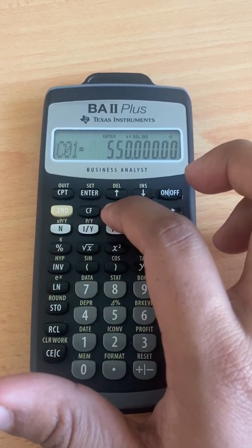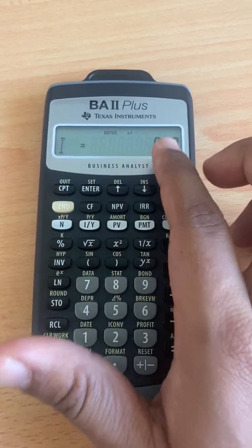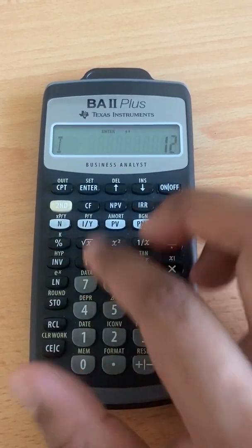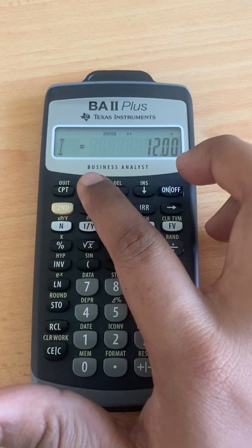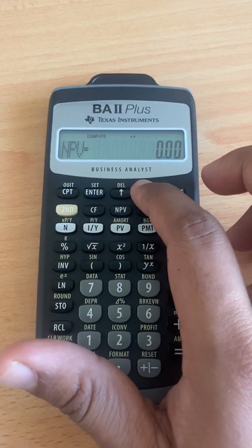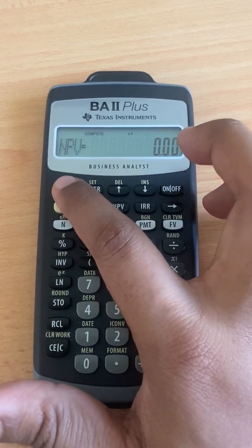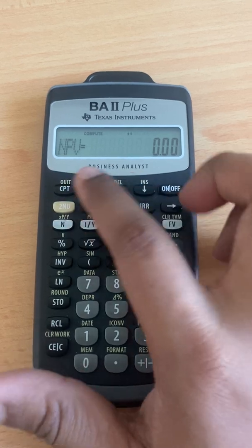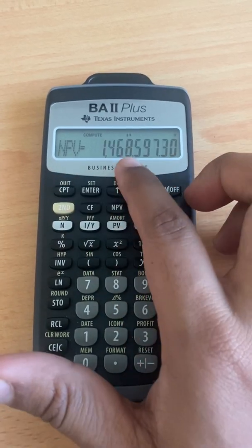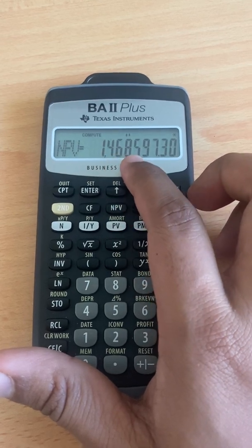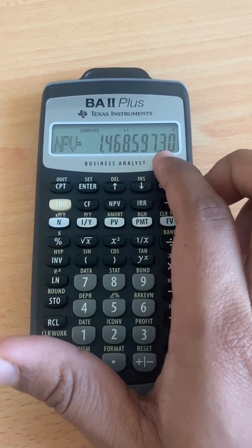After that, you press NPV. It shows 0, so you put 12, press enter for 12%. Then you press downward, press compute. Press downward, then press compute. You got 1,468,597.30.